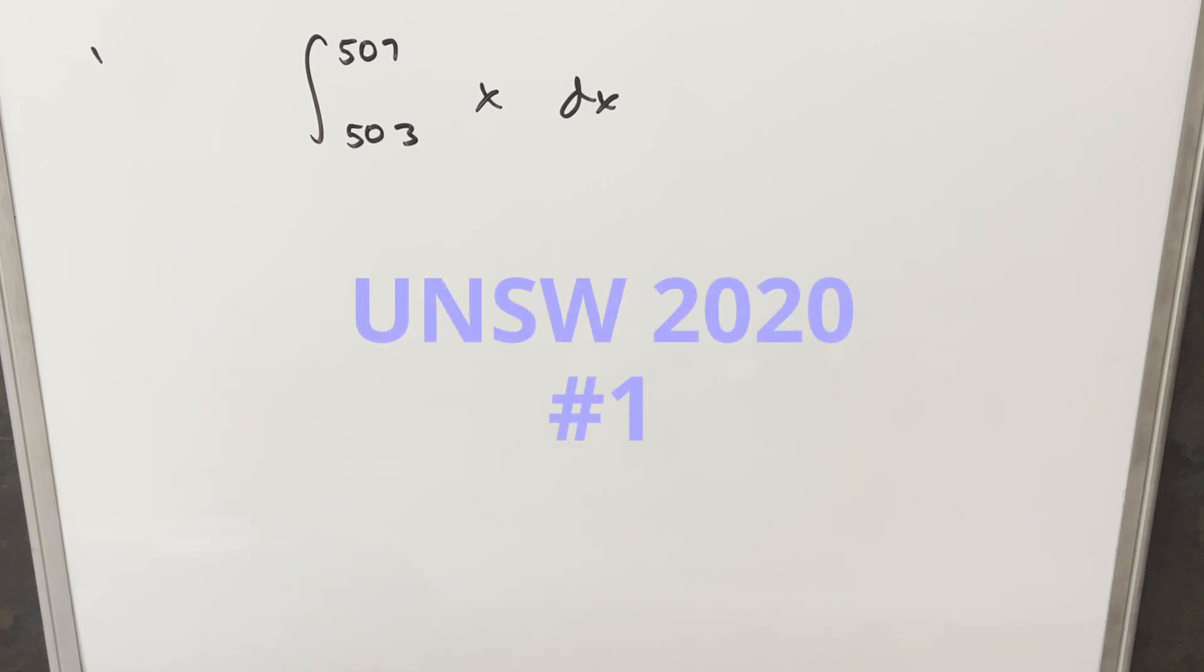We have here another integral from the UNSW integration B. This one's from 2020 problem one. We have the integral from 503 to 507 of x dx.